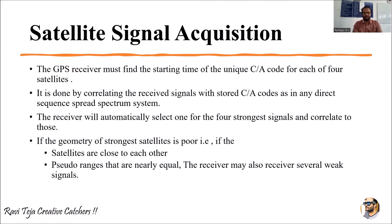There can be disturbance, noise, or interference due to which the GPS receiver may not receive the signal sometimes. All of this comes under the geometry of the strongest satellite. If that signal is poor, it means the satellites are very close to each other.